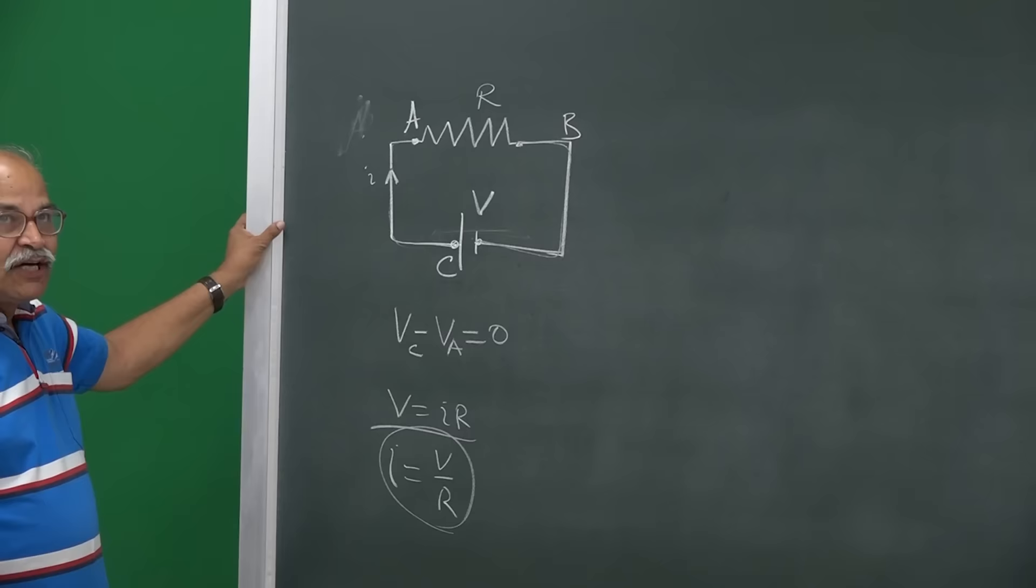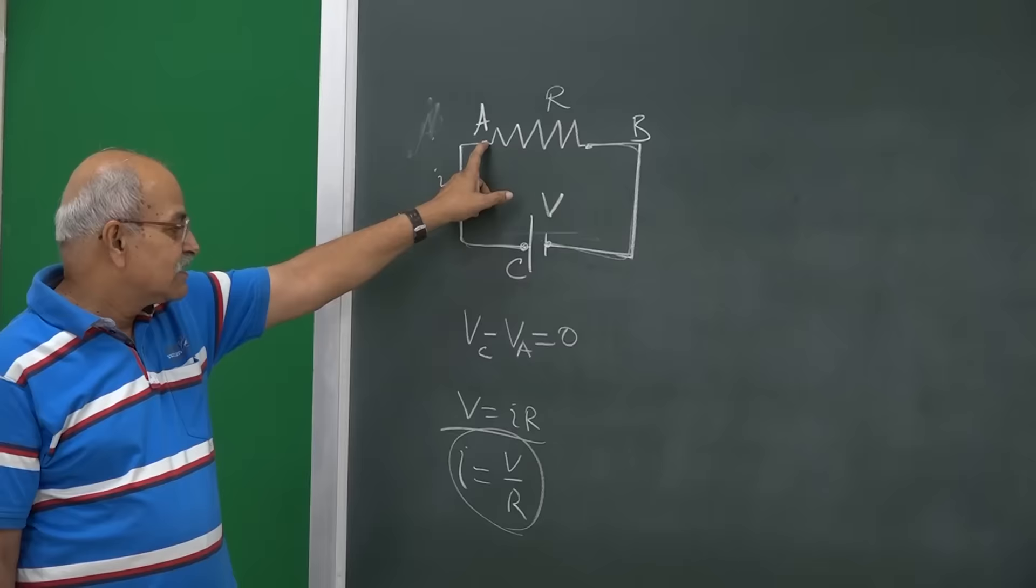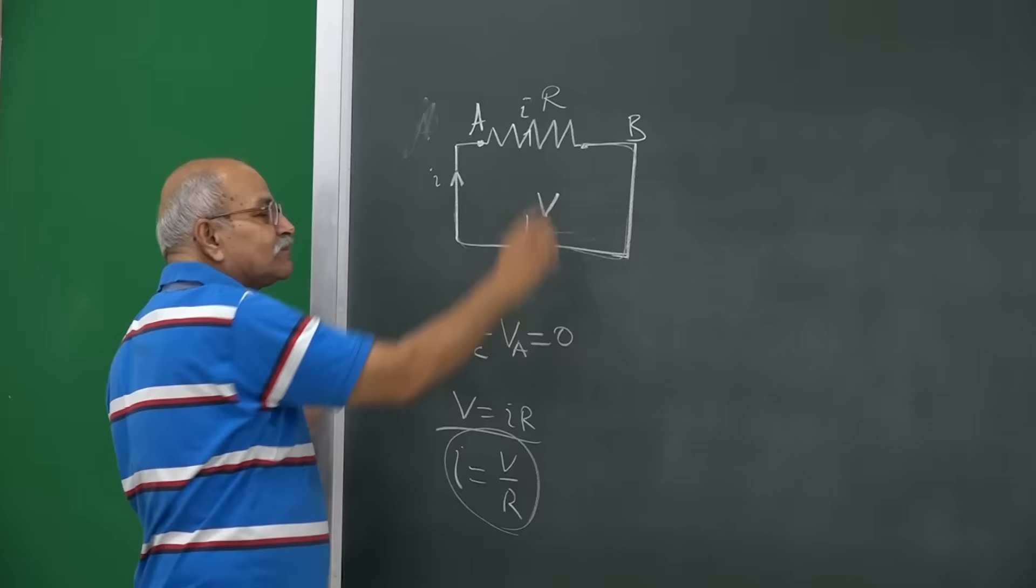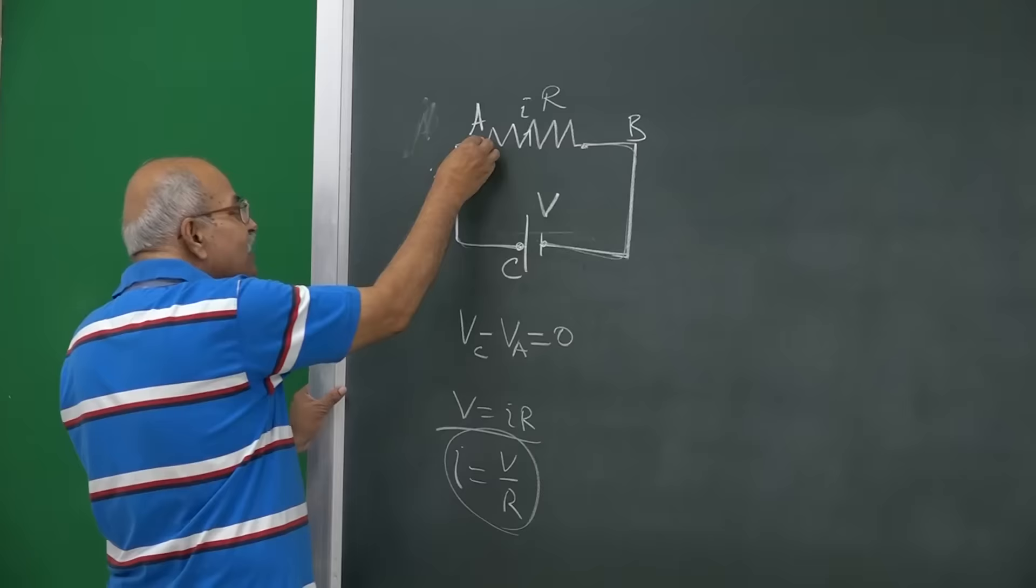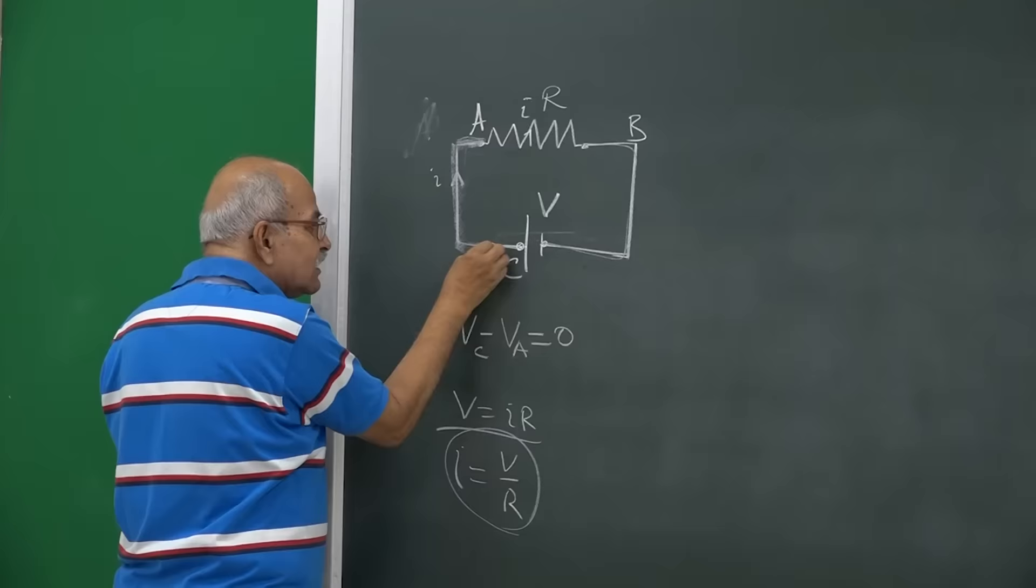Subhankar is very right that we take this VC minus VA as 0 and still say that the same current I goes here and the same current I goes here. Now, the clue is that this connecting wire is supposed to be thick enough and we neglect this resistance altogether in comparison to this resistance.